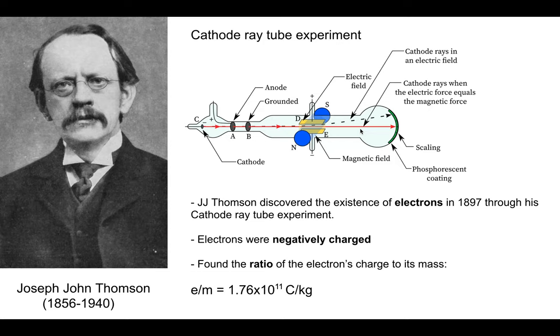In 1897, British physicist JJ Thomson discovered the existence of a tiny charged particle, which he called an electron, through his cathode ray tube experiments. He showed that electrons were negatively charged and can transmit negative charges by moving from one object to another. He also found the ratio of the charge of an electron to its mass, but was unable to determine exactly how much charge and mass each electron had.